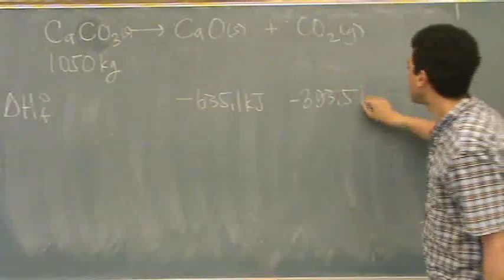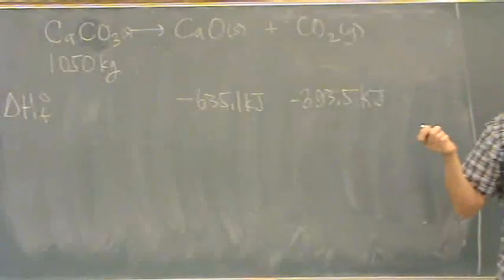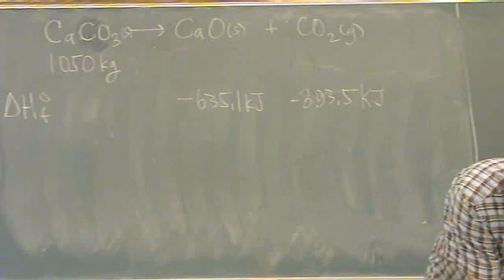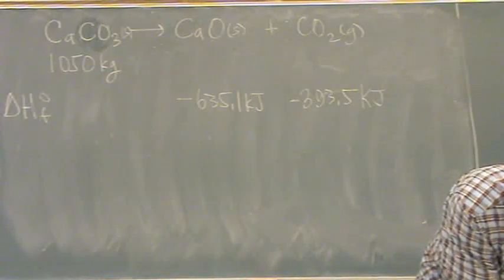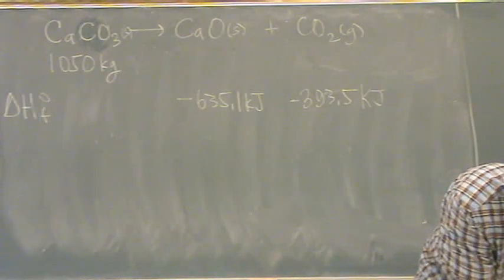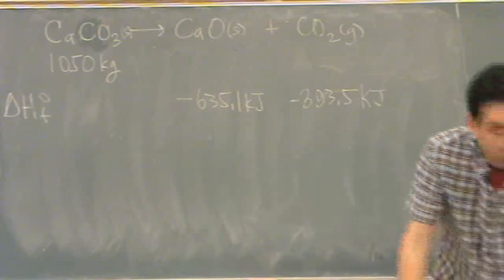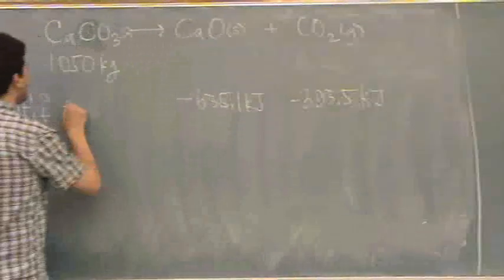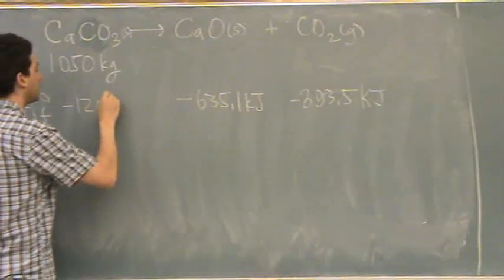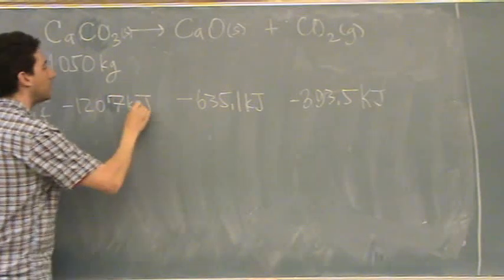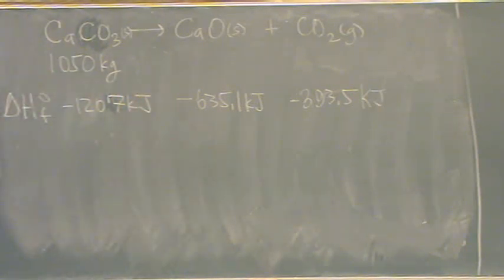Okay, somebody correct me if you've got a different number than I'm looking up. And then CaCO3 minus 1207. Okay, there we go, there's the numbers.